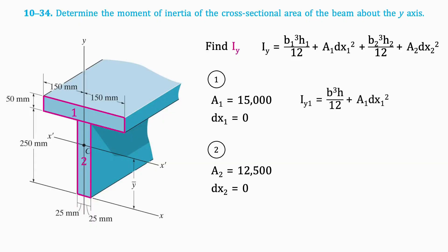Let's take a look at the first section. Because the distance from the centroid of this section to the y-axis is 0, the second term of this formula disappears, and all we need to compute is the base cubed times height divided by 12.